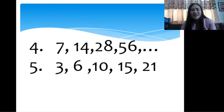3 added by 3 is 6. Added by 4 is 10. Added by 5 is 15. Added by 6 is 21. Then we have to add 7 to get the next number.